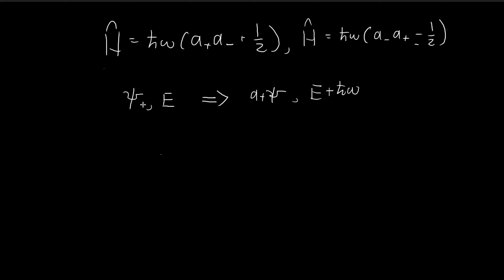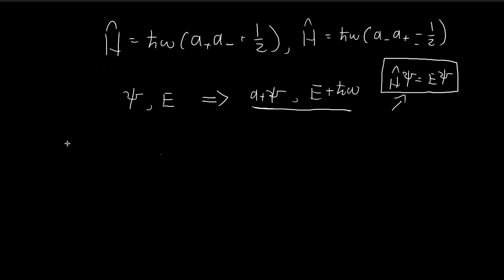When I say that something satisfies the Schrödinger equation with energy level E, that means this relationship is true — this is exactly what the Schrödinger equation is. So when I say that a-plus ξ also satisfies the Schrödinger equation, I mean that this expression can also satisfy this equality.